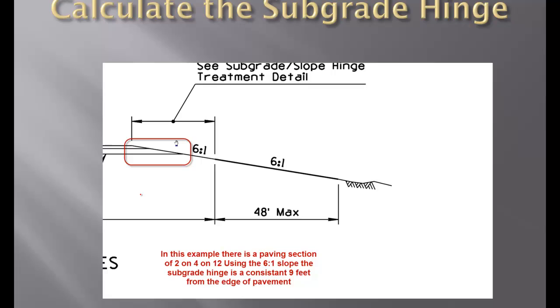For a road that remains consistent throughout its travel, if there's just one typical section, you can utilize this as your only model. In other words, just model the finished road job, and here's how you calculate the subgrade hinge.